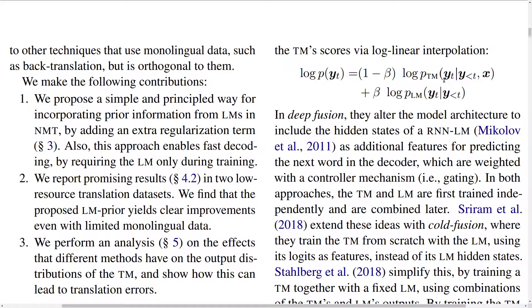The translation model relies on having access to a large amount of parallel data — sentences in German X and in English Y used for training. However, quite often we don't have a lot of sentences for many languages other than the most popular ones — languages with the highest population, let's say.